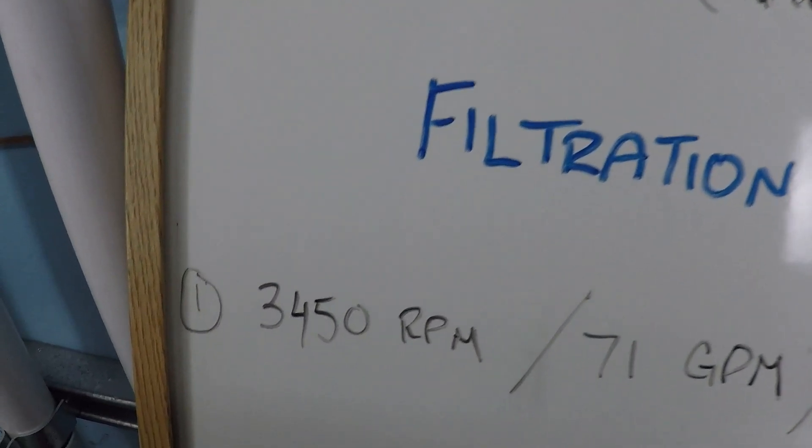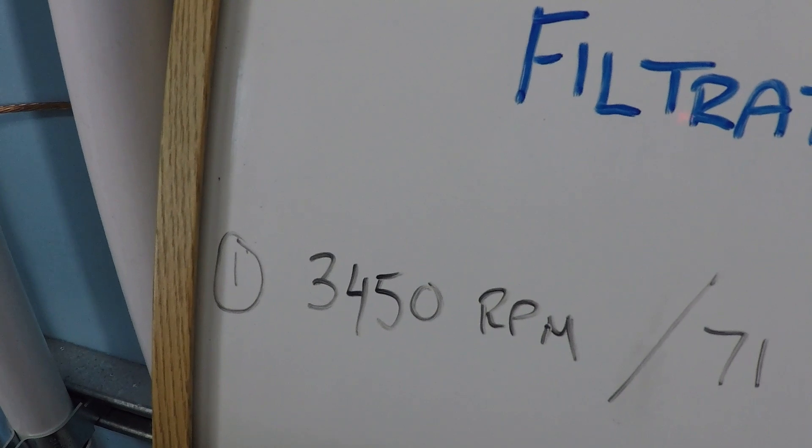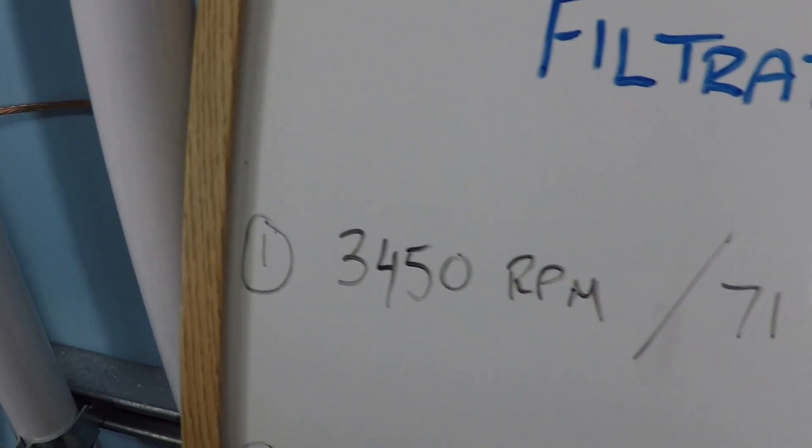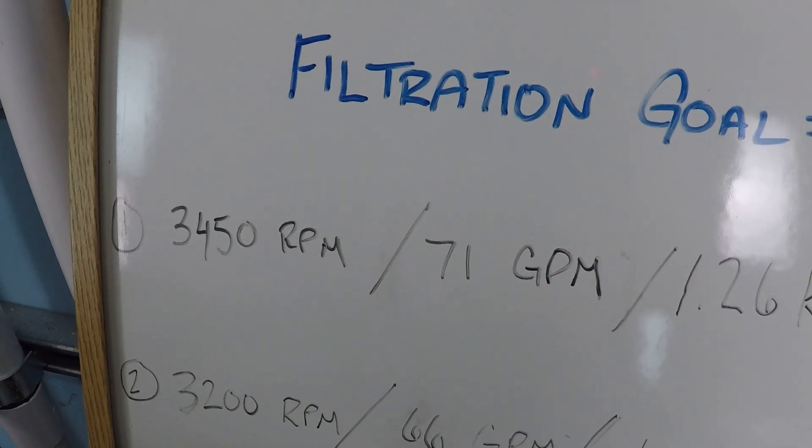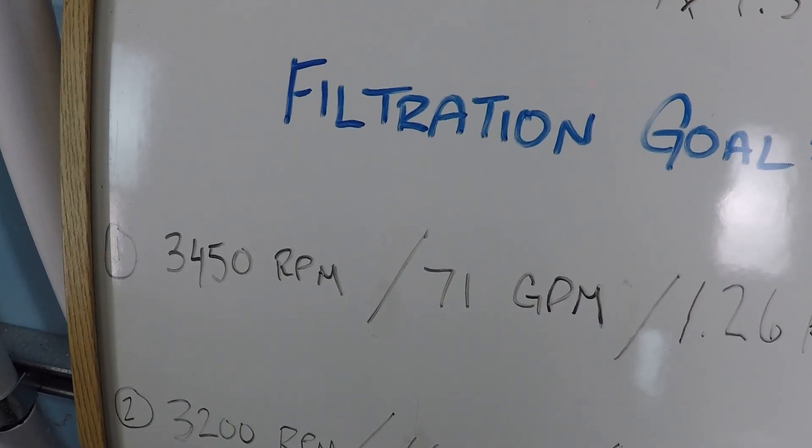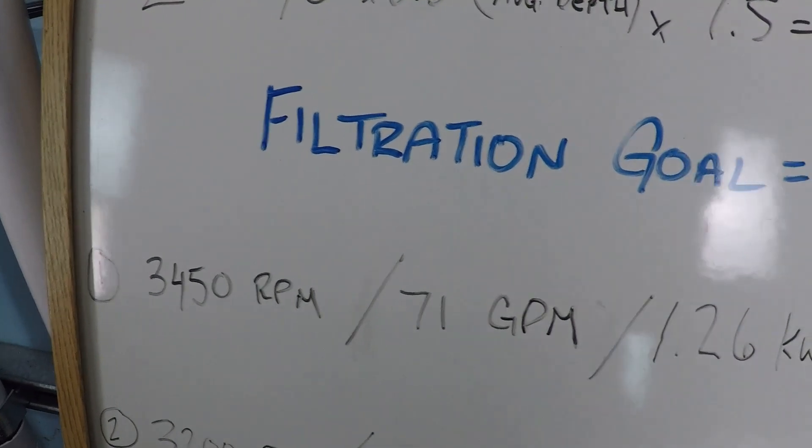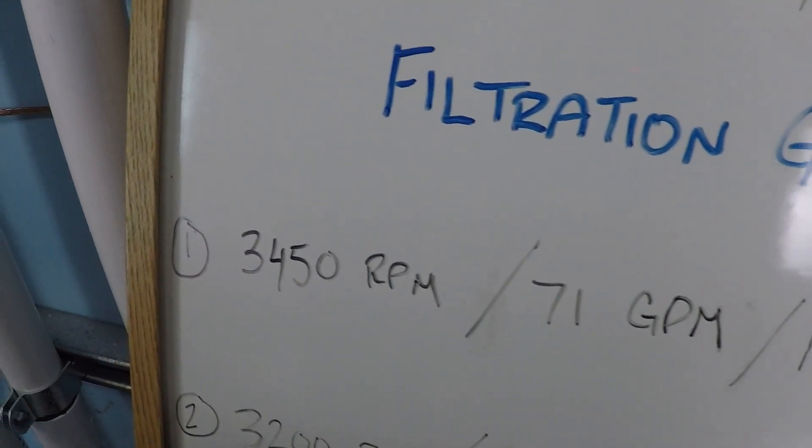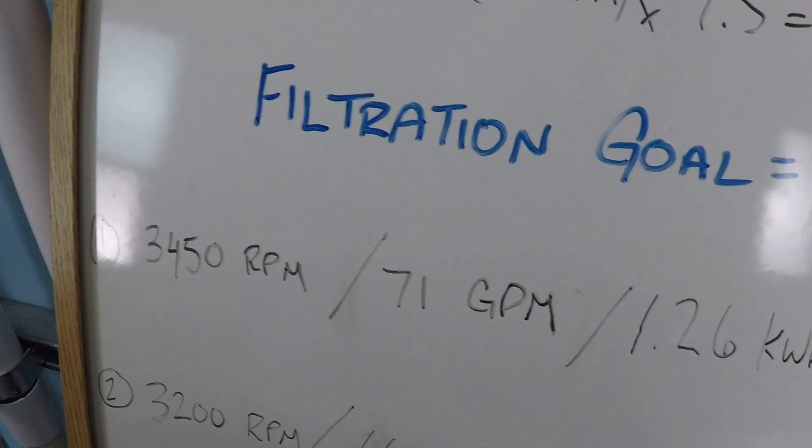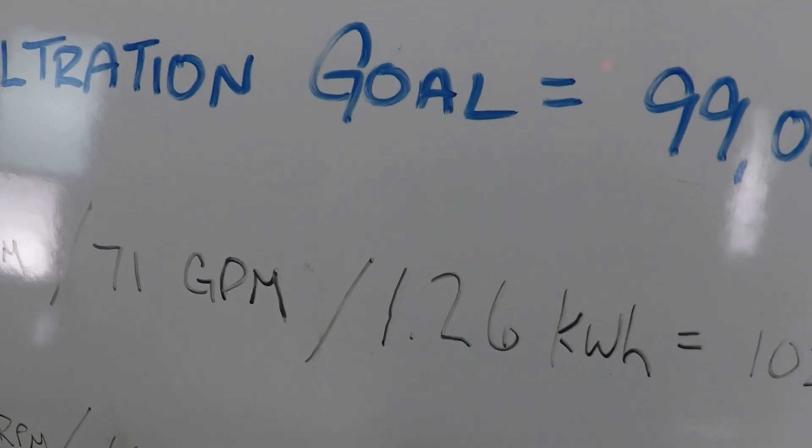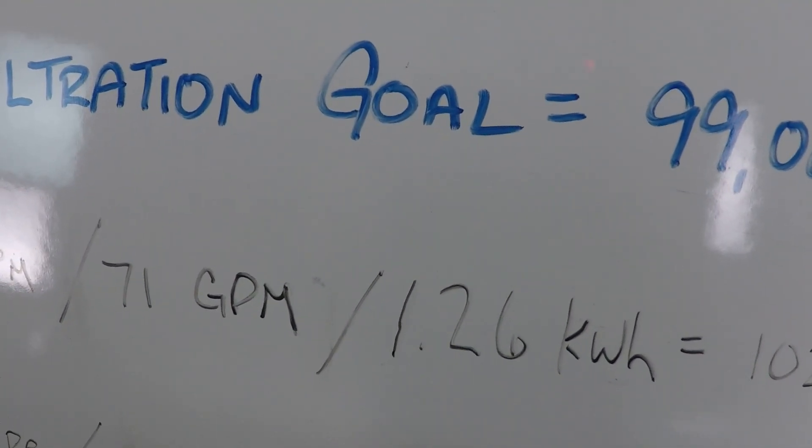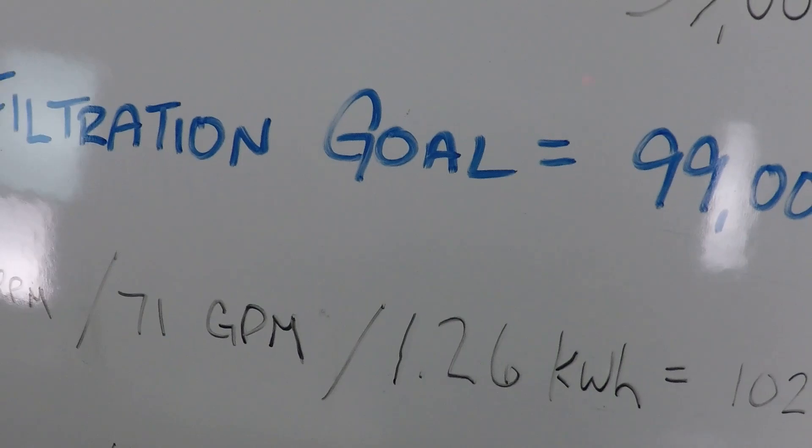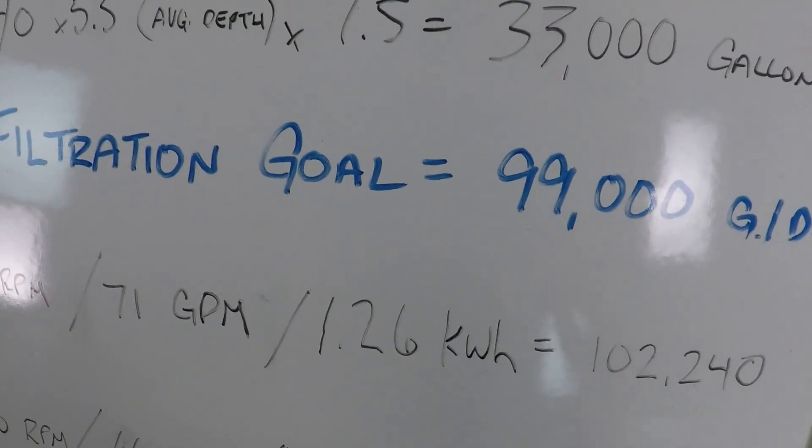So let's say you had a 3,450 RPM pump. If you only have a single speed pump, that's the RPM that you have. And on this system, which is a very basic system with approximately 30 feet of head resistance, we're able to achieve 71 gallons per minute when the pump is operating at maximum speed, this one and a half horsepower pump. During that time, we're consuming 1.26 kilowatts of power, 1,260 watts of power consumed every hour that the pump is operating like this.